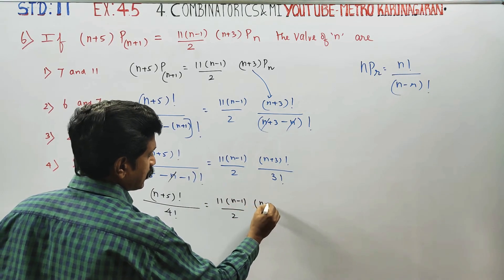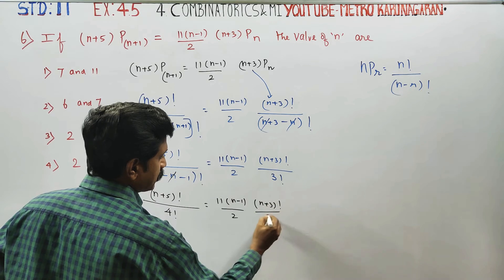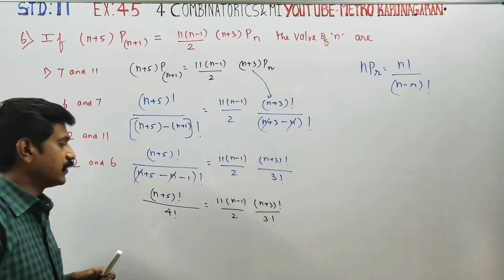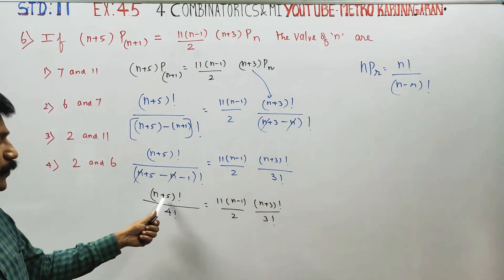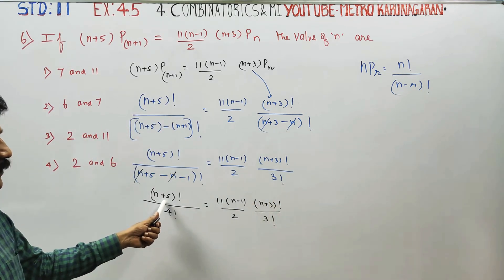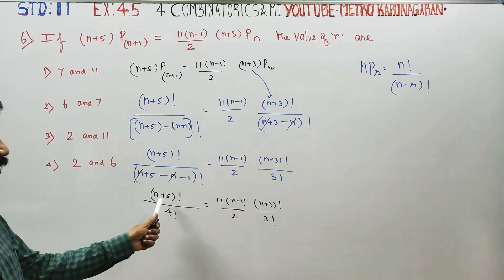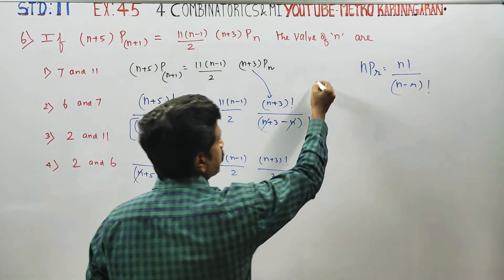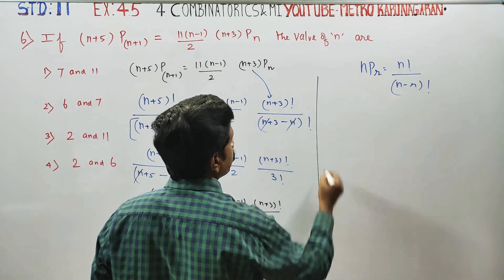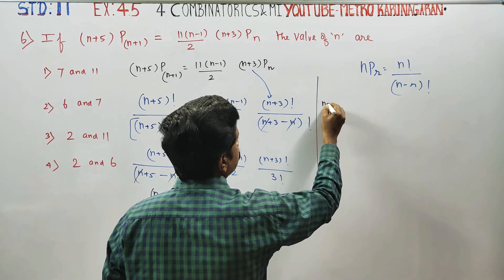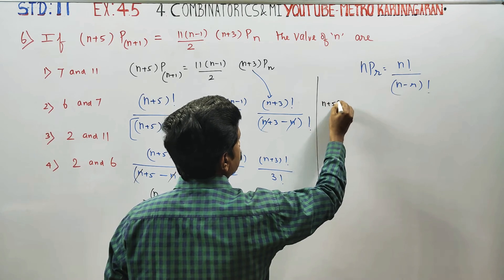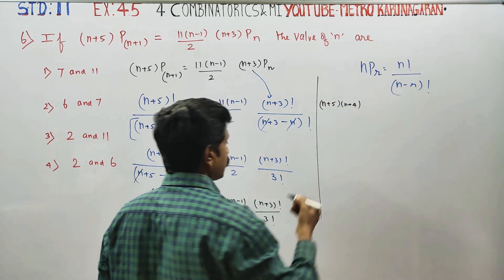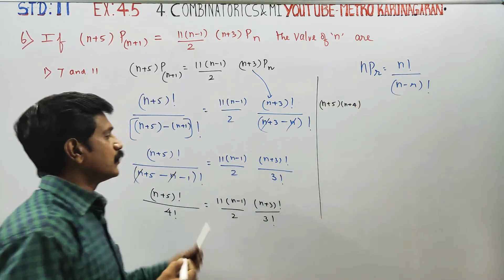n plus 3 factorial by 3 factorial. Now you can open it. n plus 5, 2nd stage — open it. n plus 5, n plus 4.